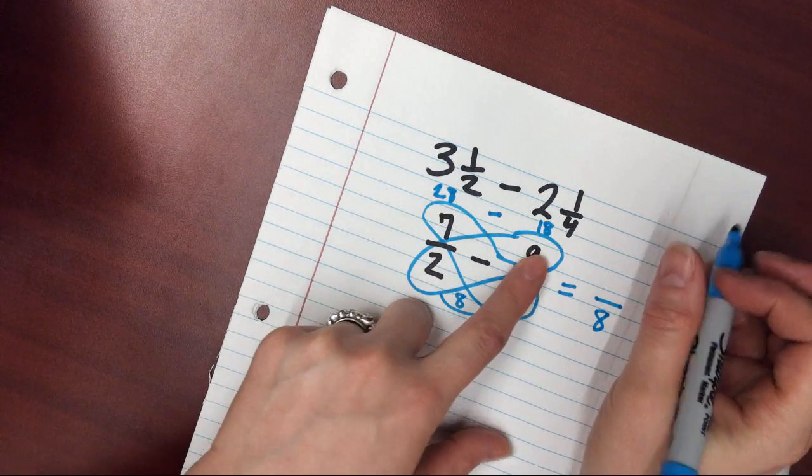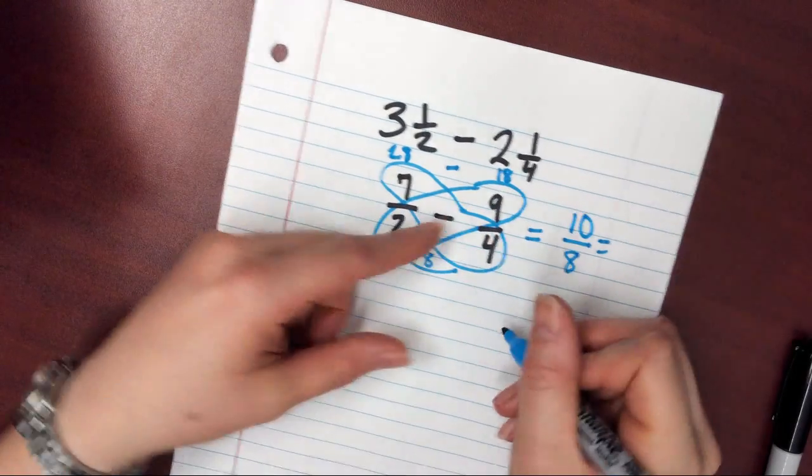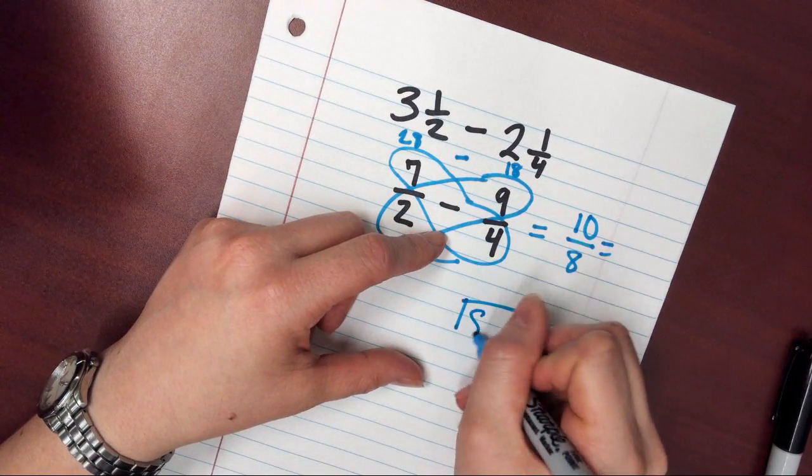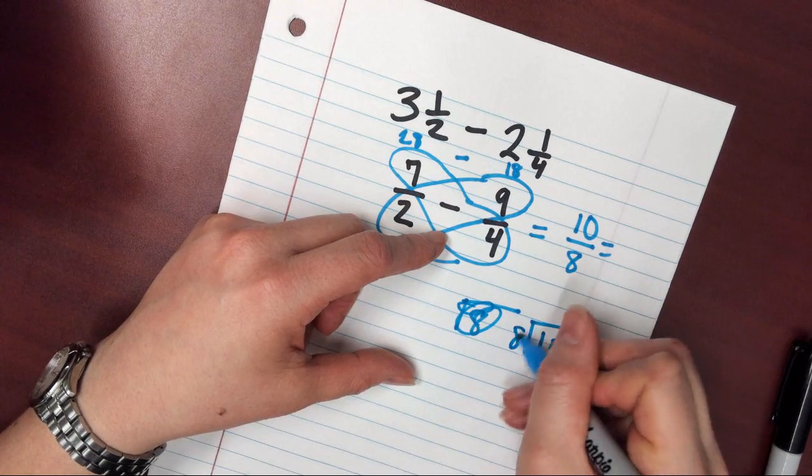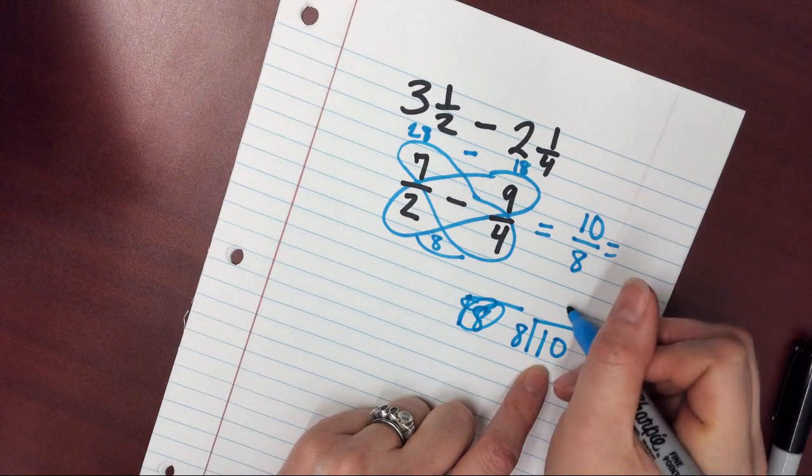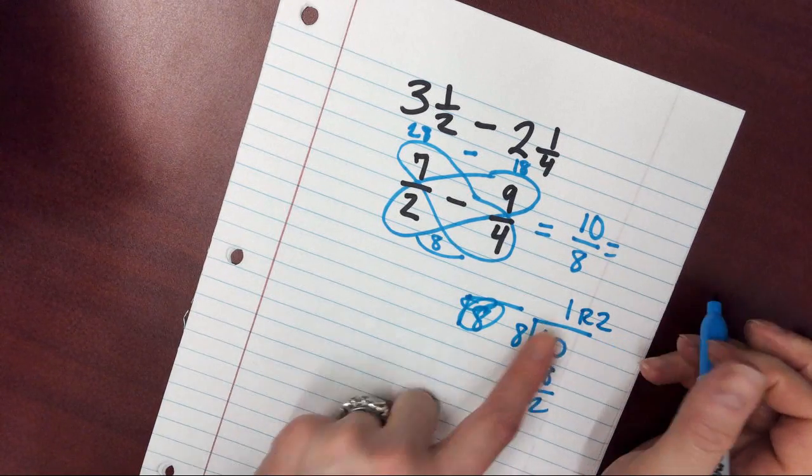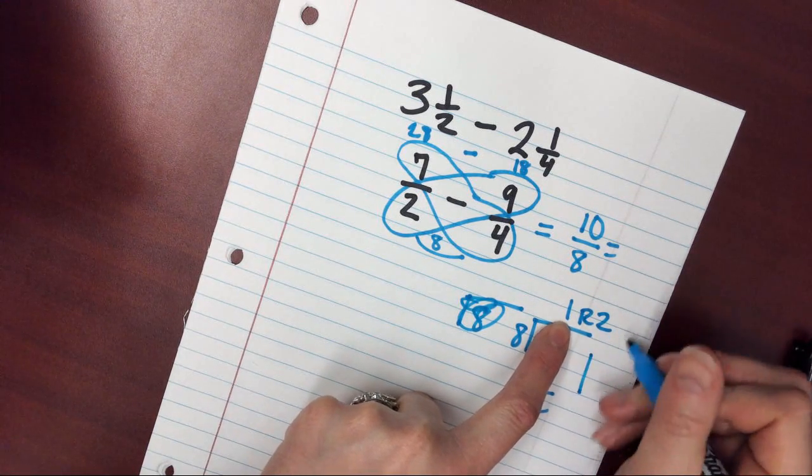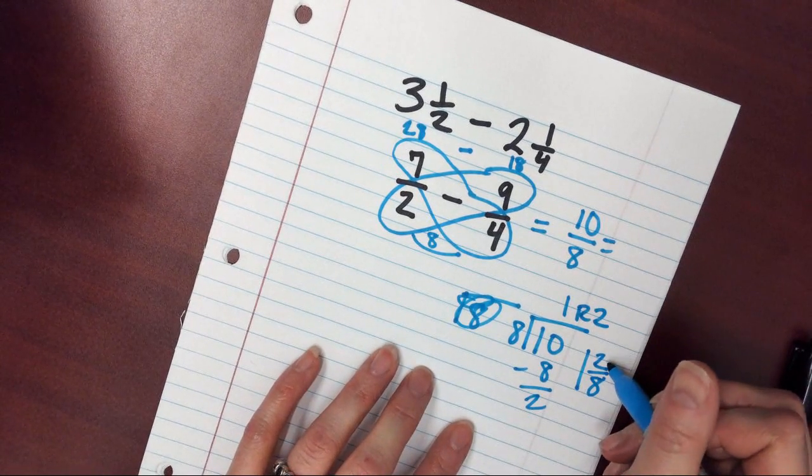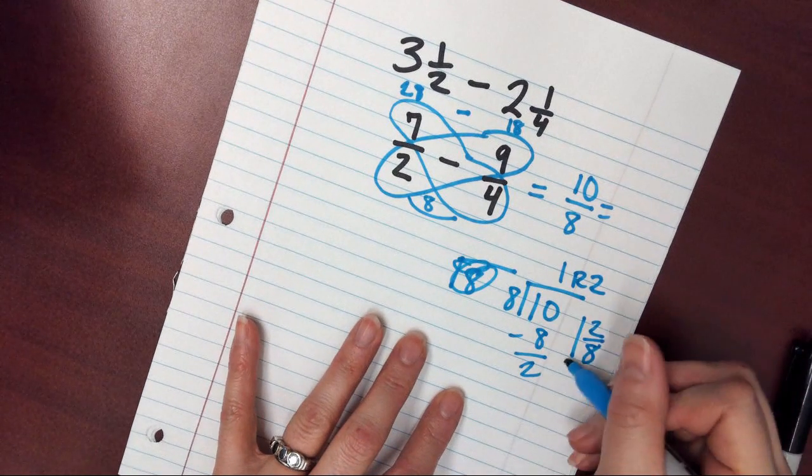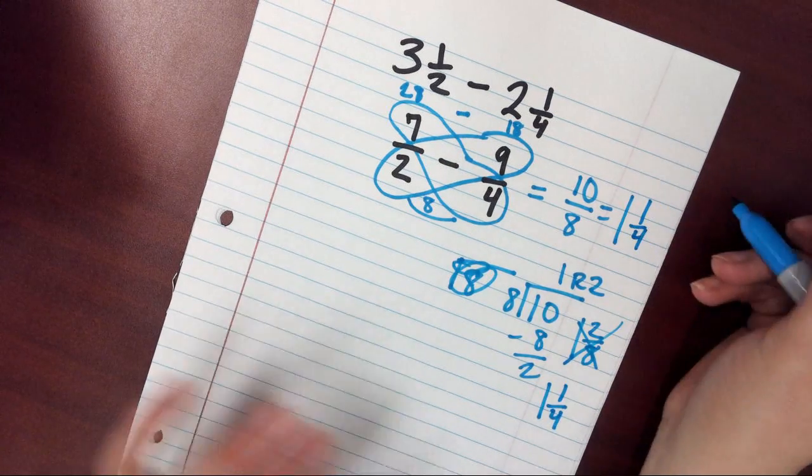If I turn that into an improper fraction, 8, oh, I'm sorry, that's wrong. Don't pay attention to that. 10 divided by 8, 8 goes into 10 one time, minus 8 is equal to 2, remainder 2. My quotient becomes my big number, 2 over 8. So 1 and 2 eighths, which is the same as 1 and 1 fourths. That's my answer.